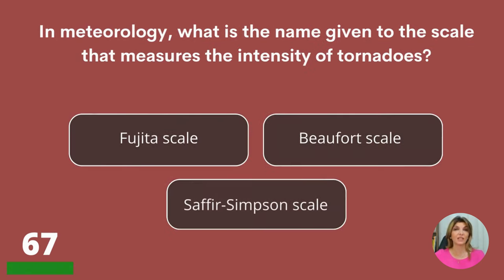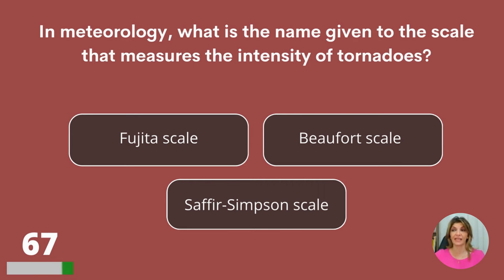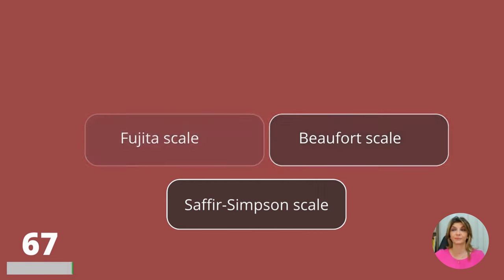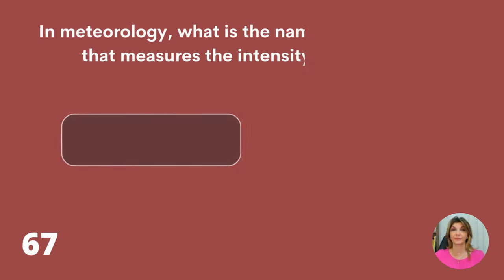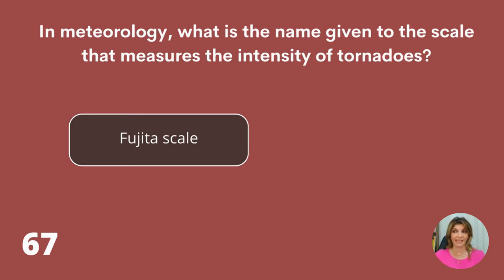In meteorology, what is the name given to the scale that measures the intensity of tornadoes? The Fujita Scale, Buford Scale, or Safir-Simpson Scale? The Fujita Scale.